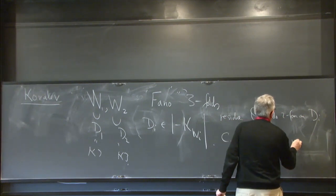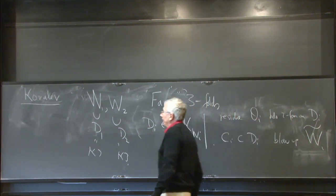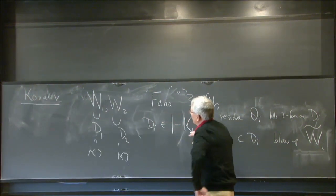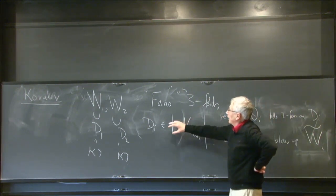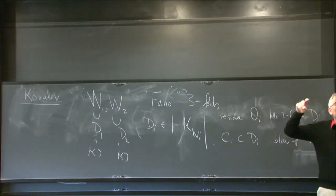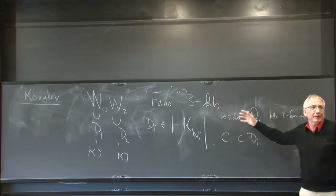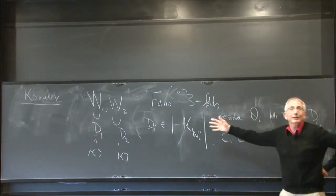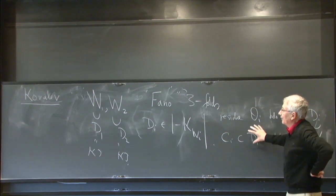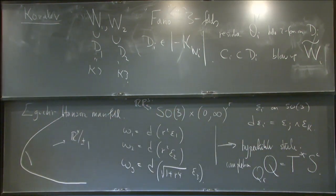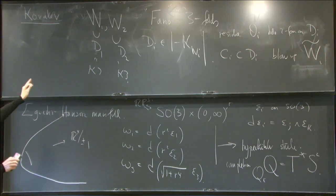We choose curves Cᵢ in Dᵢ and blow up these curves to get another pair of manifolds W̃₁, W̃₂. These curves are chosen so that the proper transform of Dᵢ in this blowup has trivial normal bundle. So we do a blowup operation and arrive at a slightly different manifold which still contains a copy of Dᵢ — initially a smooth K3.